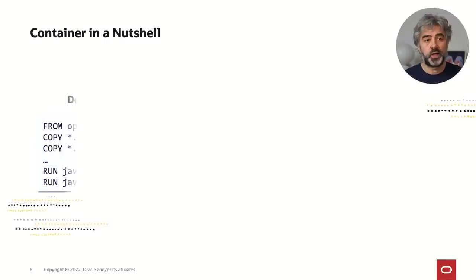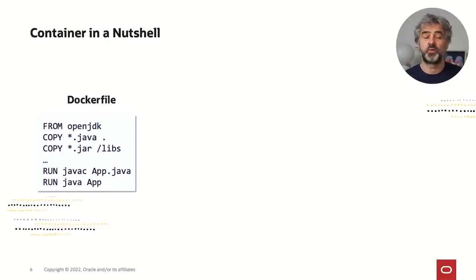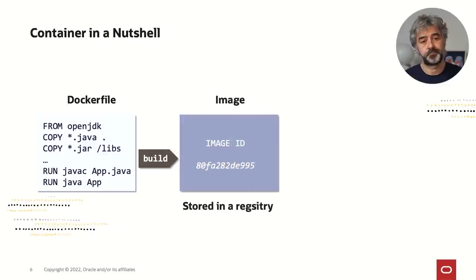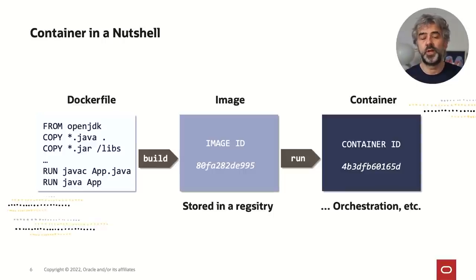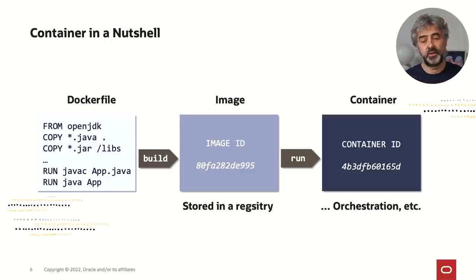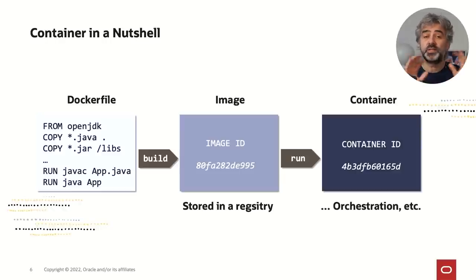In a nutshell, how containers work: you start from a Dockerfile, which is a recipe describing what your container should be made of and what it should do. You build it using Docker build. What you obtain is a container image — think of it as the equivalent of a Java class. That image is stored locally or, most of the time, in a registry such as Docker Hub. When you run a Docker image, you get a container instance — the equivalent of an instance of that Java class. That's basically the container that is running.